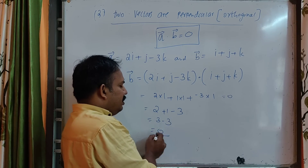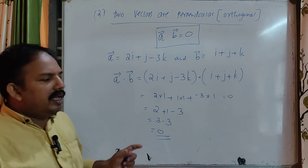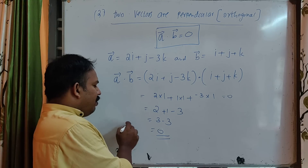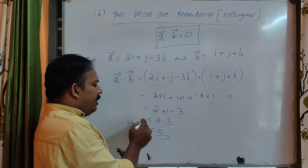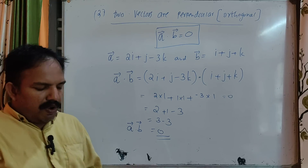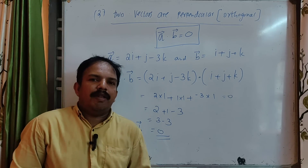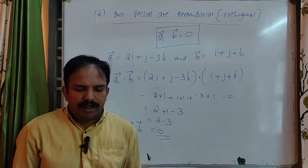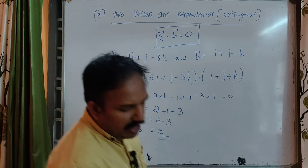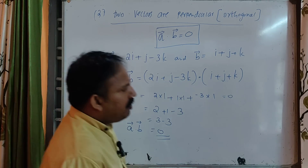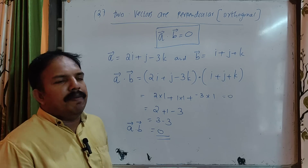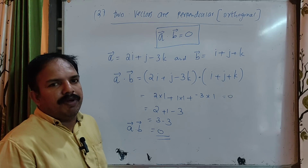The answer is equal to 0. That is, the A dot B value is 0. Therefore, A and B are perpendicular. The answer is A and B is perpendicular.